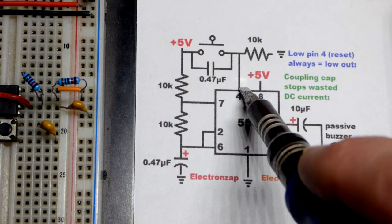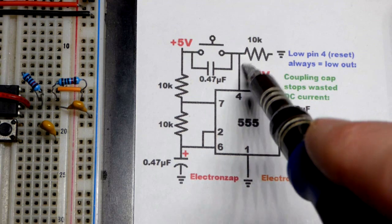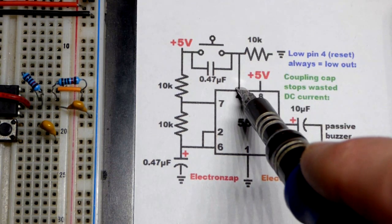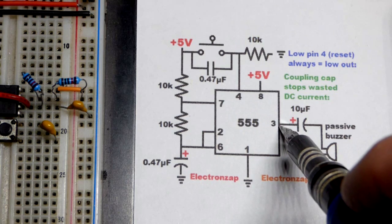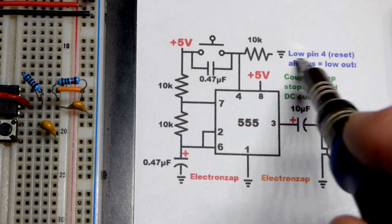But when you have pin 4 getting a low voltage, I think it's somewhere below half of the supply voltage but close to the negative rail in any case, then it holds the output low. Doesn't matter what else anything else wants to do. The reset pin is the most powerful pin. As long as it is low, the output's always low.